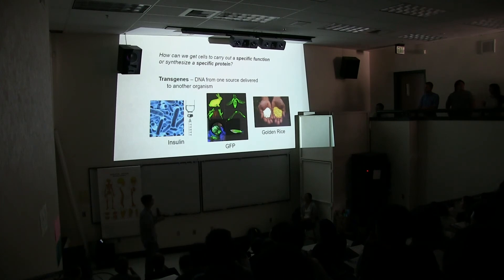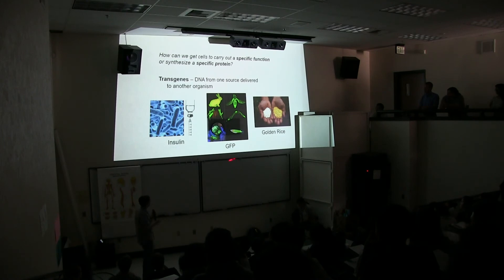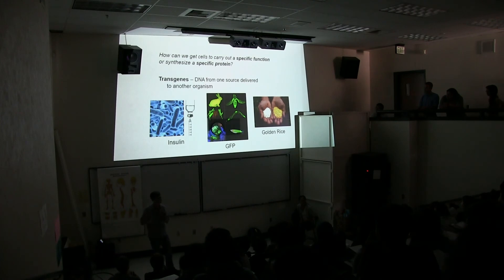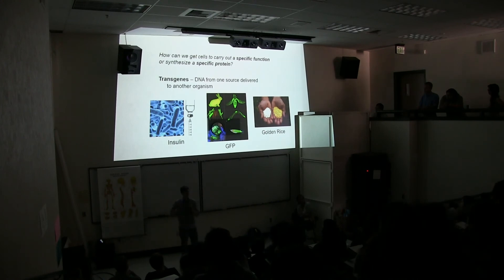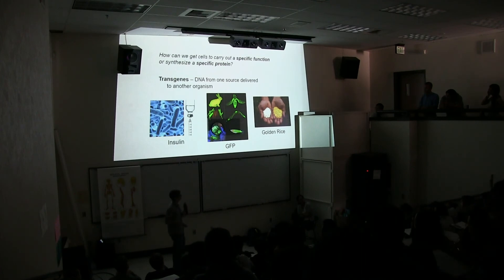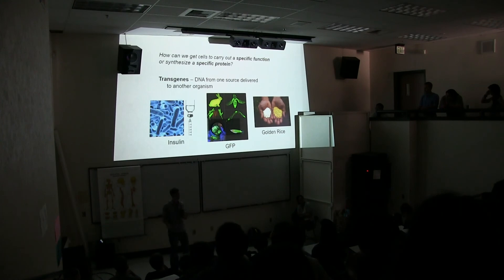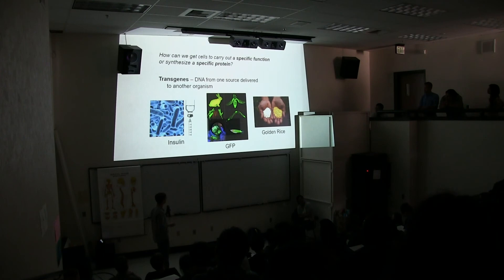Some examples you might have heard about: we now make insulin - which every one of you makes in your own cells - and we get bacteria to make it for us. There's also a fluorescent protein that comes from a jellyfish; now we can make other organisms express it, making certain cells express this protein. And golden rice - taking the vitamin A gene from certain organisms and putting it into our food supply to make it much more healthy for humans.